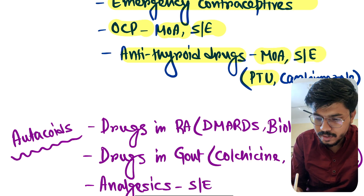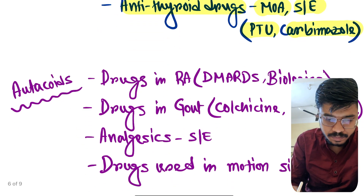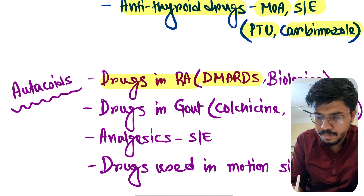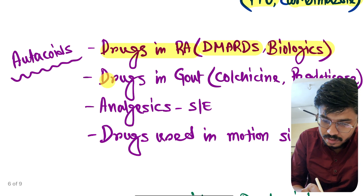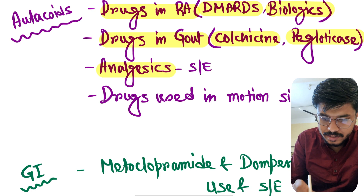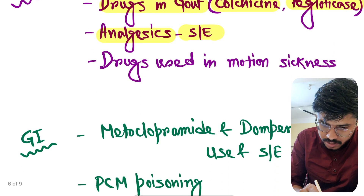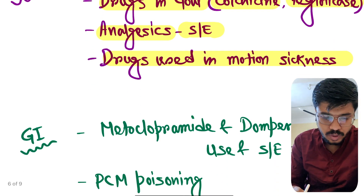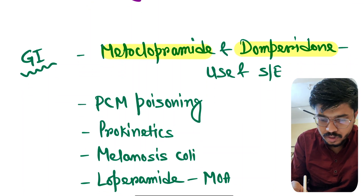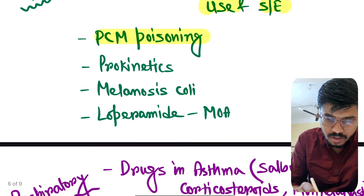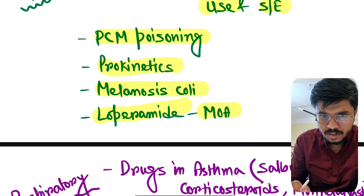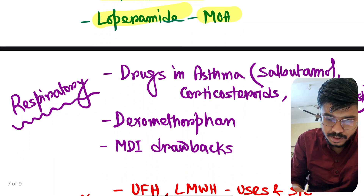Anti-thyroid drugs mechanism and side effects, especially propylthiouracil and carbimazole. Autocoids, drugs in rheumatoid arthritis especially DMARDs and biologics. Drugs in gout, especially colchicine and pegloticase. Analgesics side effects. Drugs used in motion sickness. From GIT: metoclopramide and domperidone uses and side effects. PCM poisoning. Prokinetics, melanosis coli, loperamide mechanism.